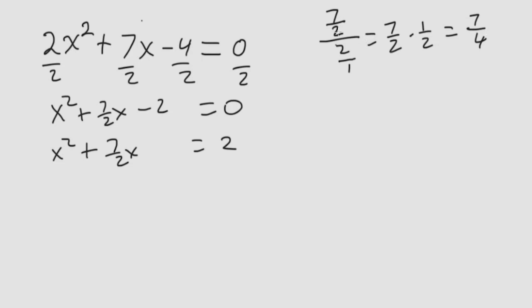So 7 halves divided by 2 is 7 fourths. So I take that, and I square it, and it becomes 49 over 16, and I add it to both sides. So these two are equivalent.